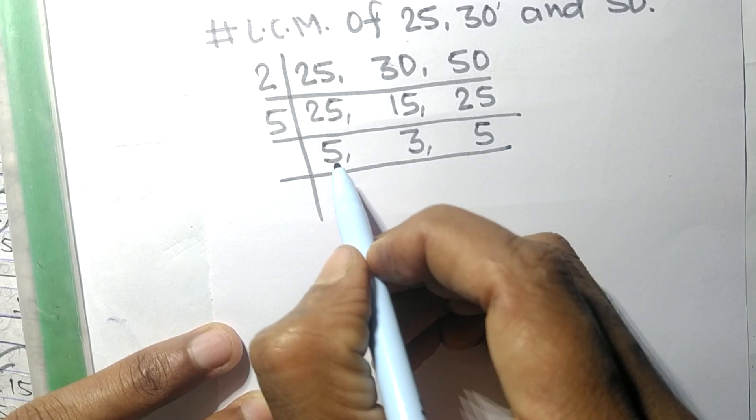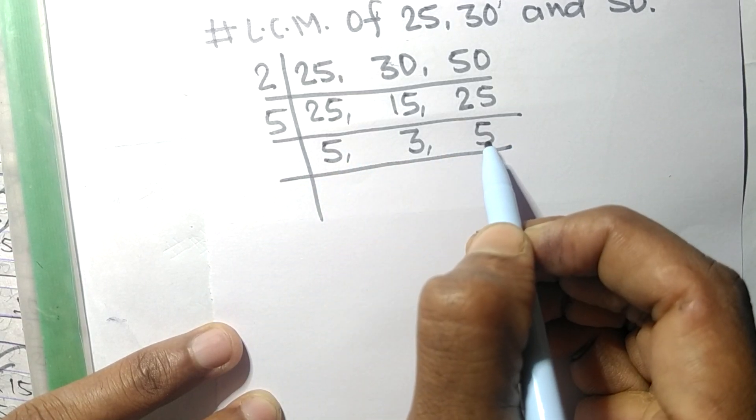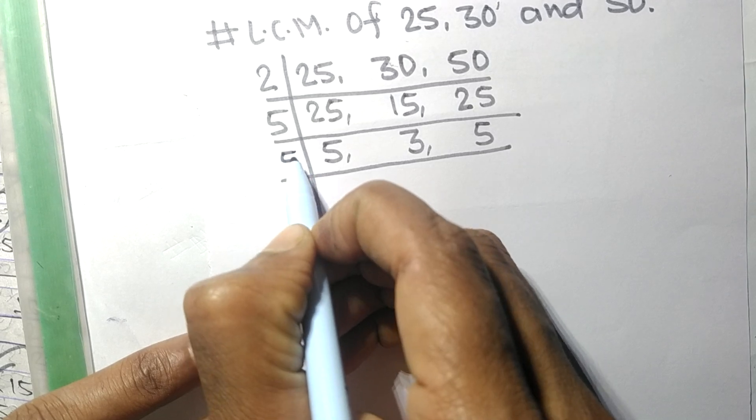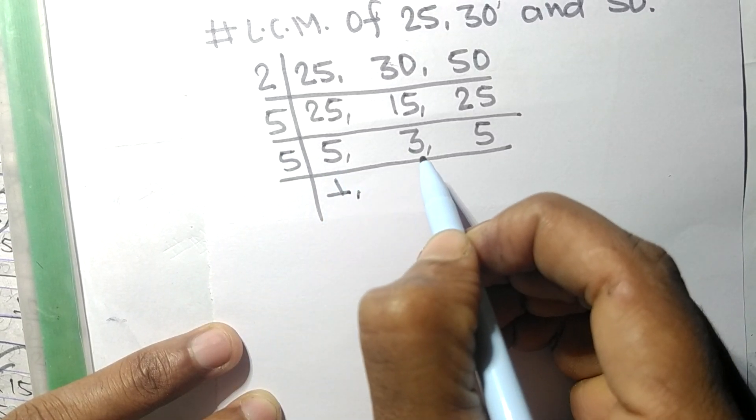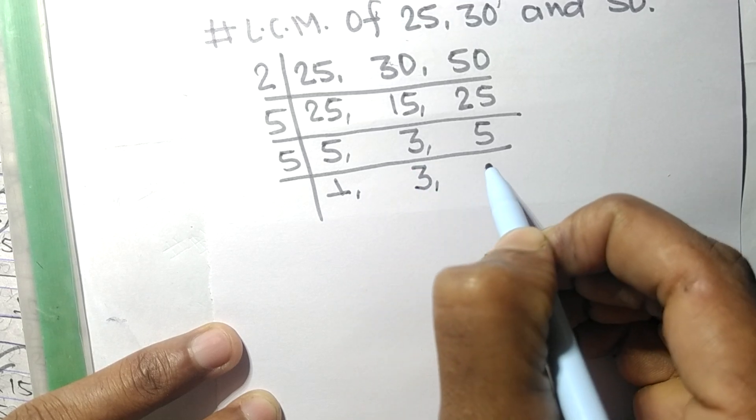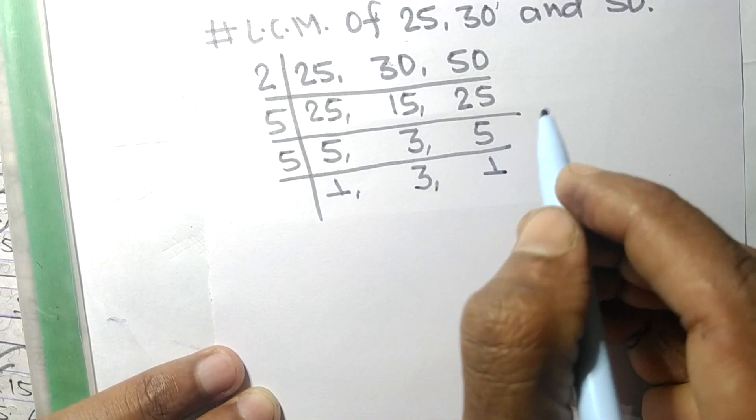So now the numbers, these both 5 are divisible by 5, so 5 times 1 means 5, 3 not divisible, so it is same, 5 times 1 means 5.